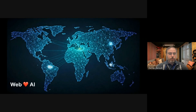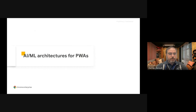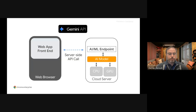No prior AI knowledge is required; however, if you want to review some of the foundational concepts, including key terms and things like neural networks, you can check out this course by Jason Mace on YouTube. Let's start reviewing some core AI ML concepts for progressive web apps or web applications. Traditionally, AI ML features are integrated into web apps by exposing server-side endpoints, allowing the app to consume them via API calls, such as with the Gemini API.